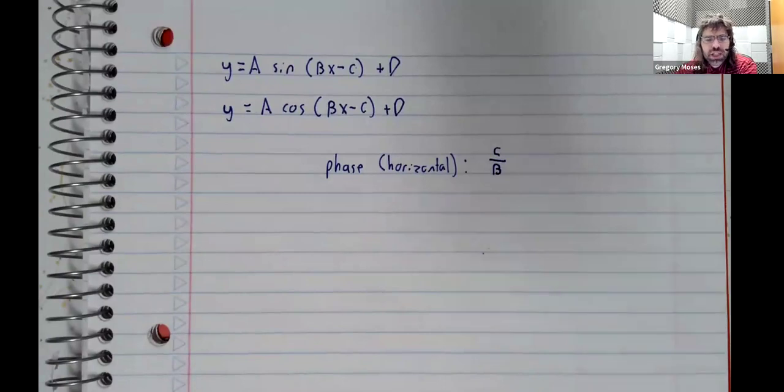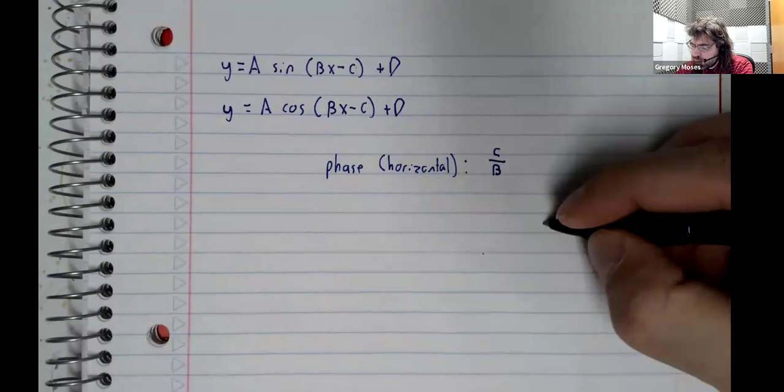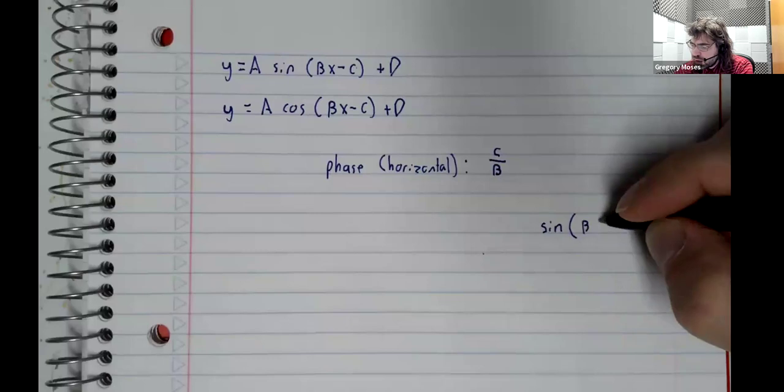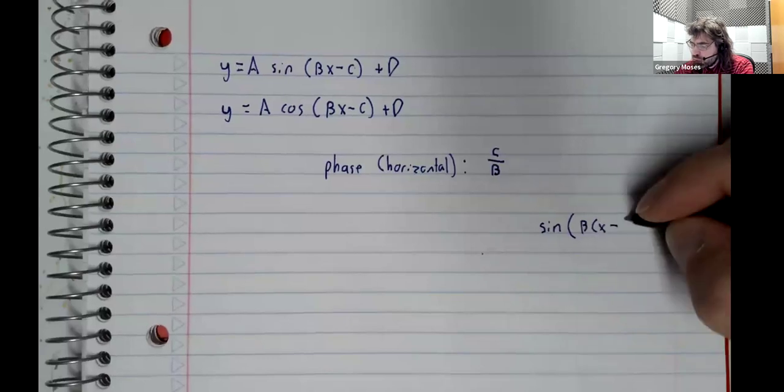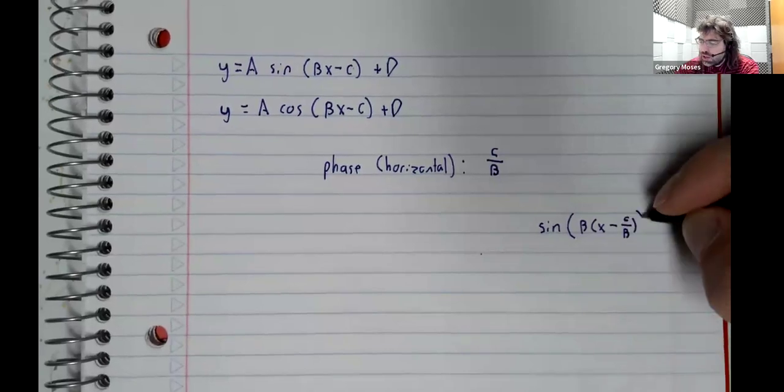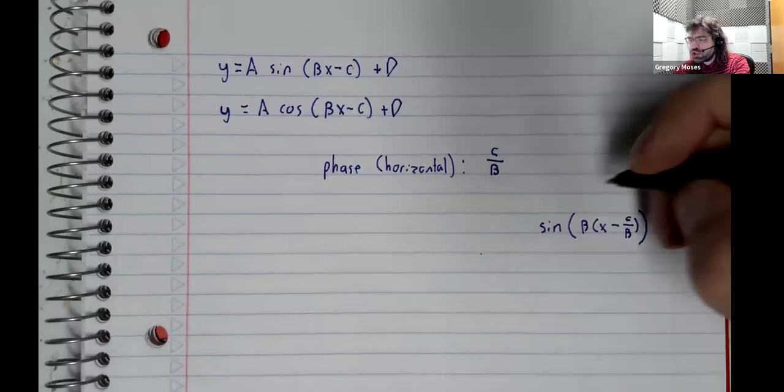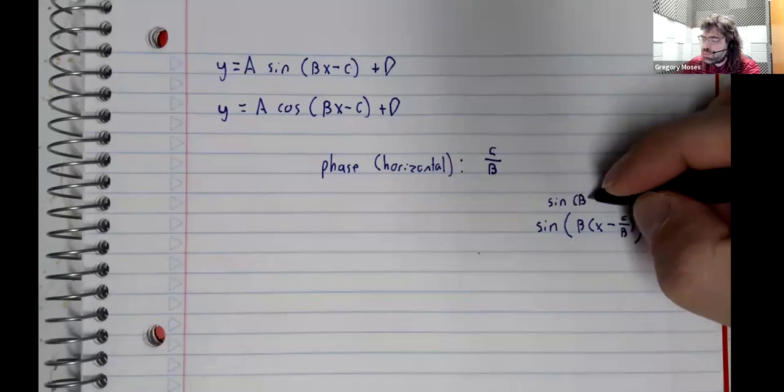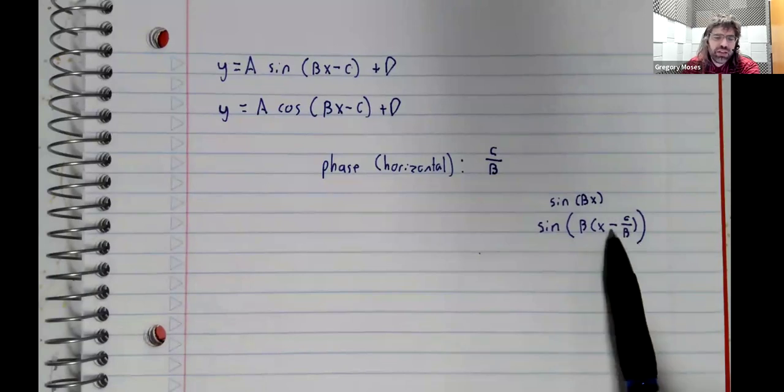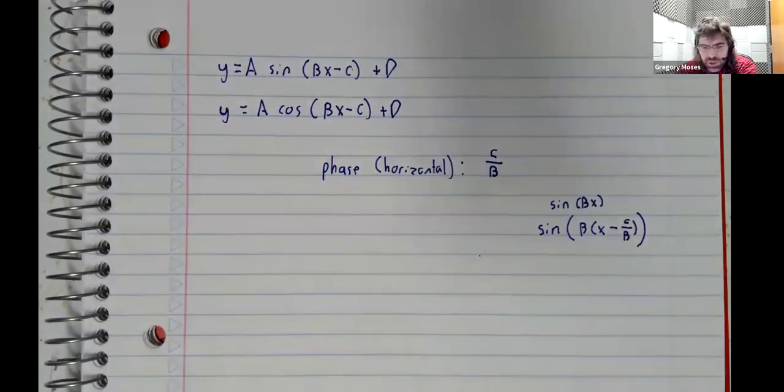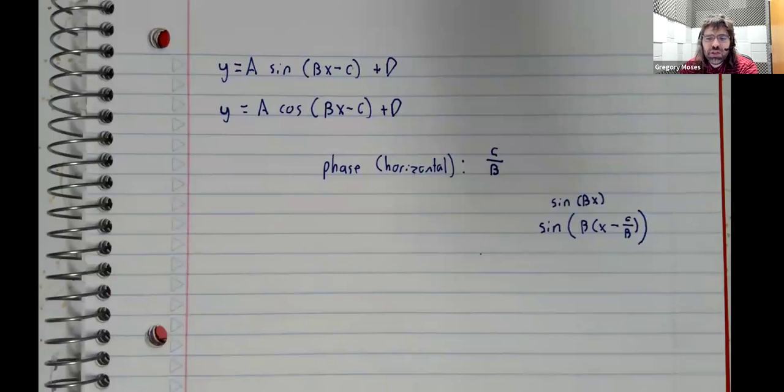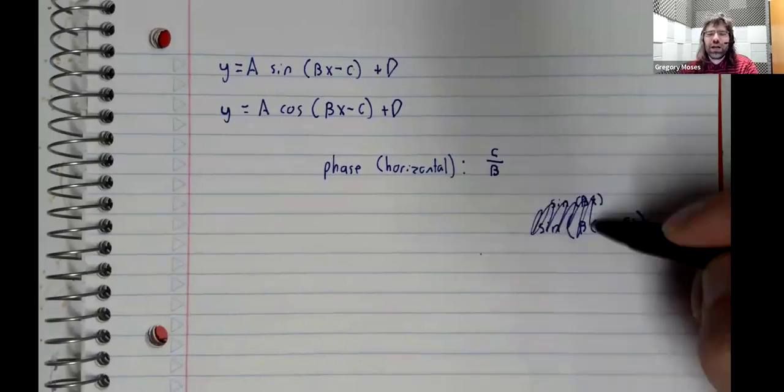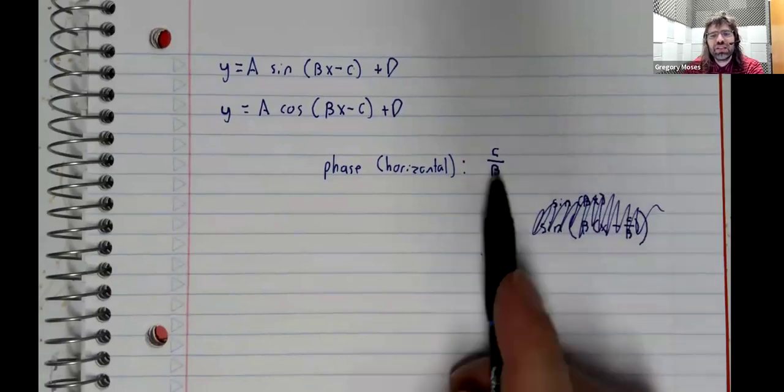If you've taken college algebra and seen horizontal shifting, you can understand why: our default function starts with sine of BX, then we replace X with X minus C over B, which is a horizontal shift of C over B. If you haven't taken college algebra or this is all Greek to you, don't worry—C over B is the take-home message.